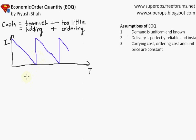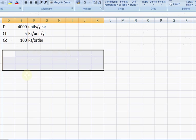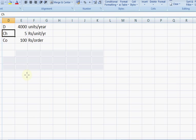Now let's look at an Excel sheet and try to understand how the concept of EOQ works. I have an Excel sheet here. There is a yearly demand of 4000 units, the holding cost is 5 rupees or 5 dollars per unit per year, and the ordering cost is 100 rupees or 100 dollars per order.